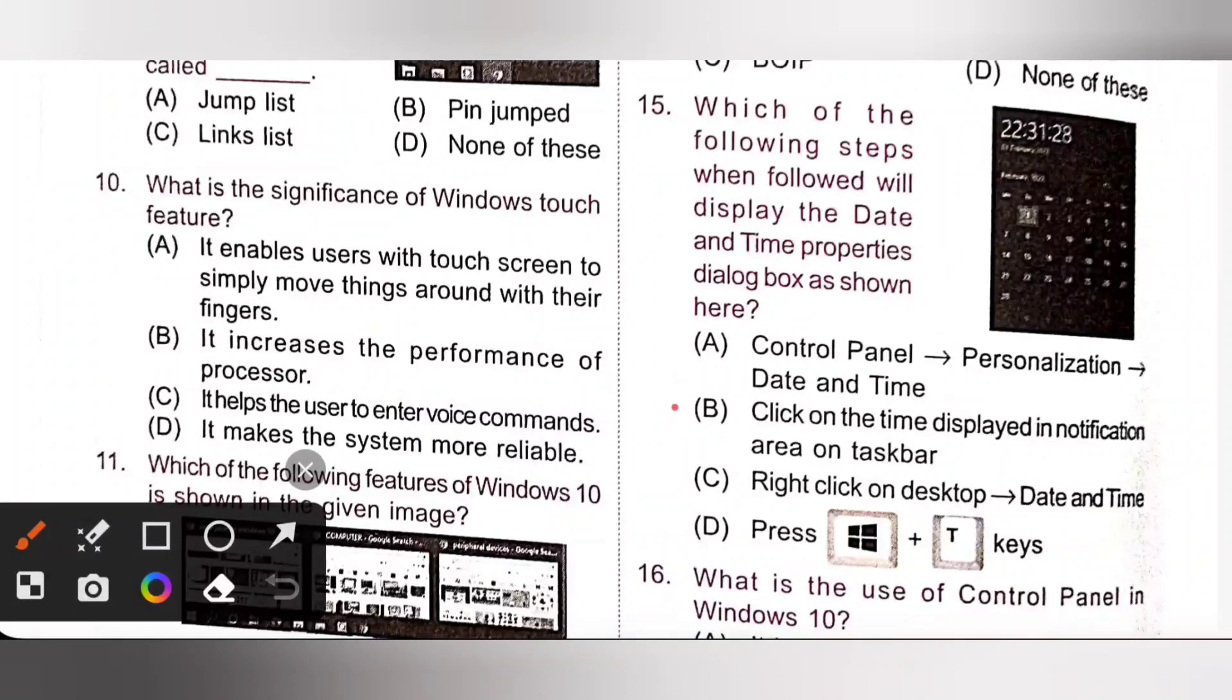To display date and time properties, click on the time displayed in notification area on taskbar. So, option B is the correct answer.